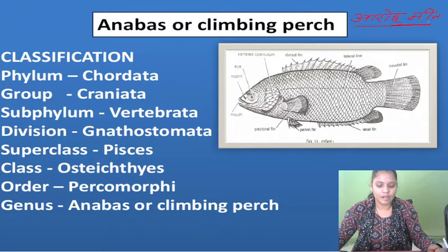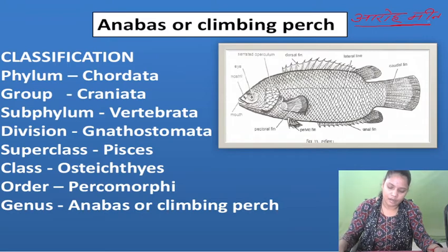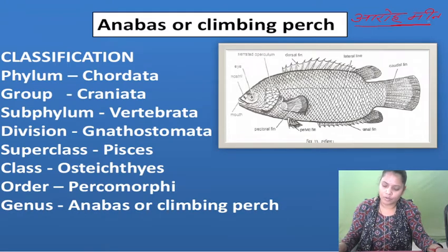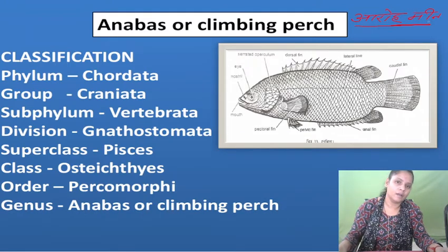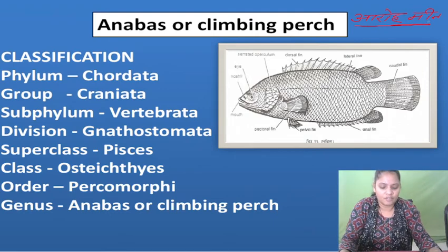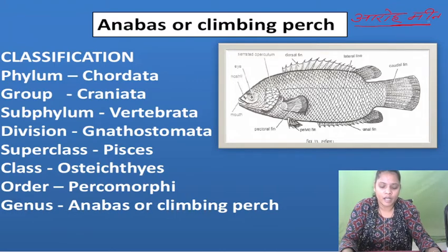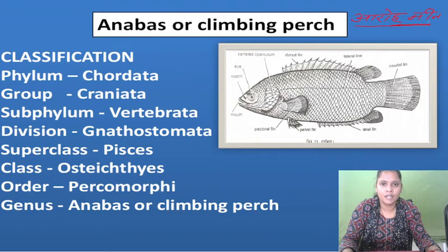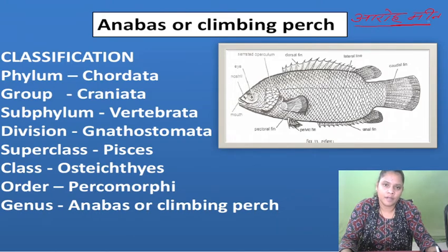First of all, Phylum Chordata — also called Nervo-pod, Noto-pod, and pharyngeal filaments. The group is called Craniata, which is called Kappal and Krapal. The sub-group is all about the Phylum Vertebrata.